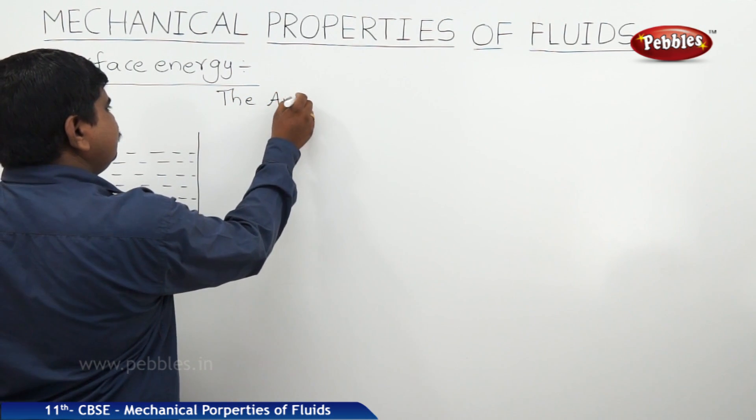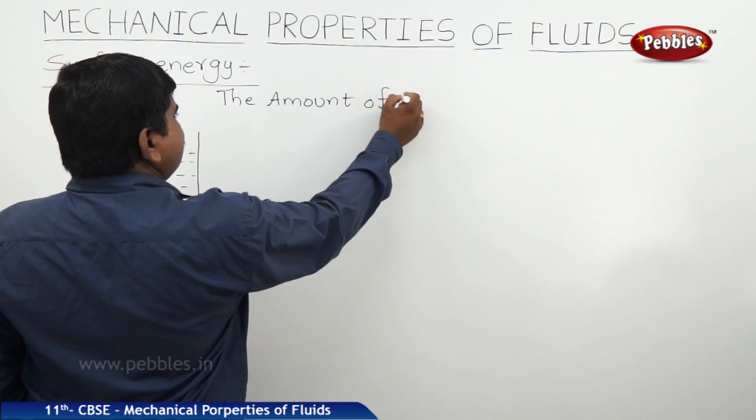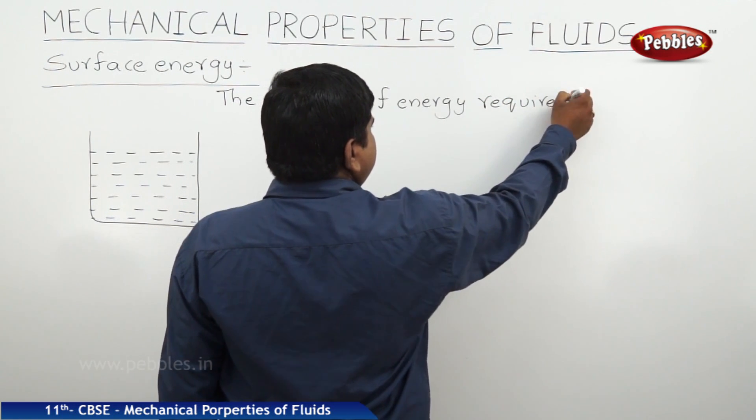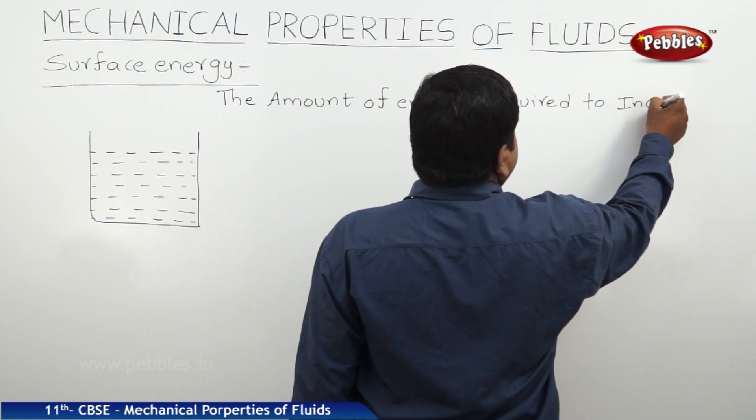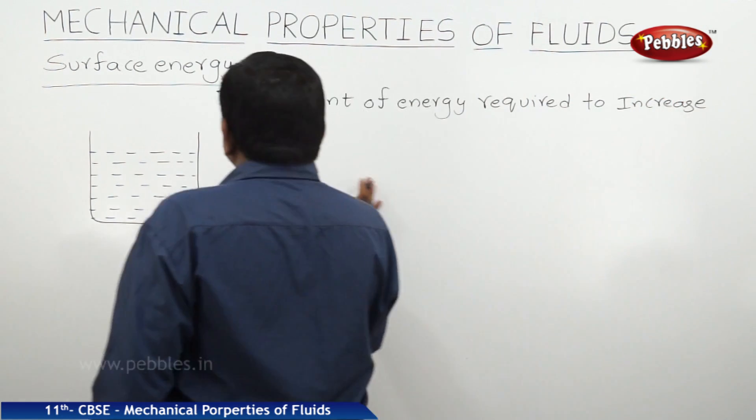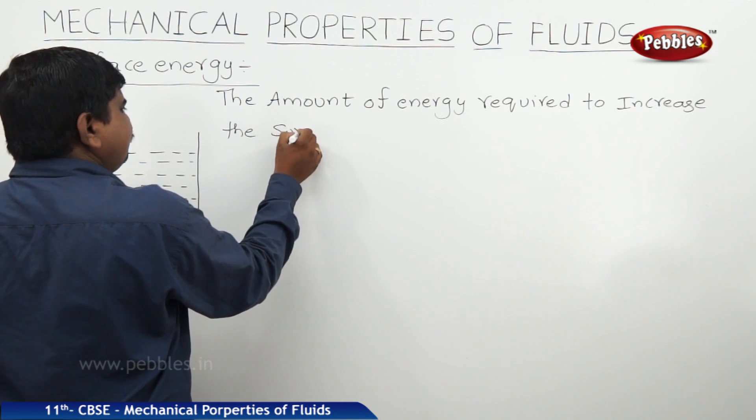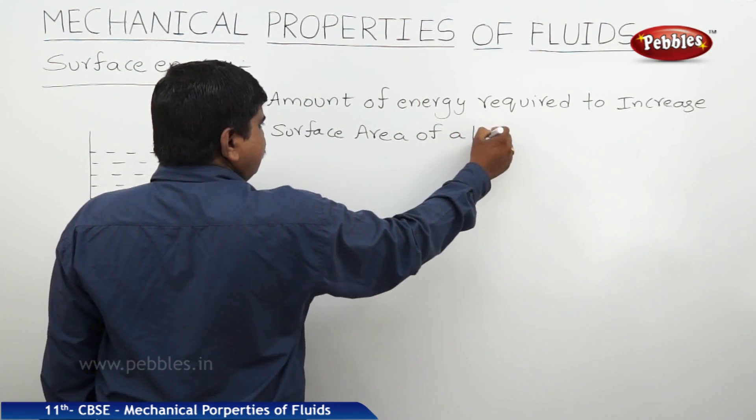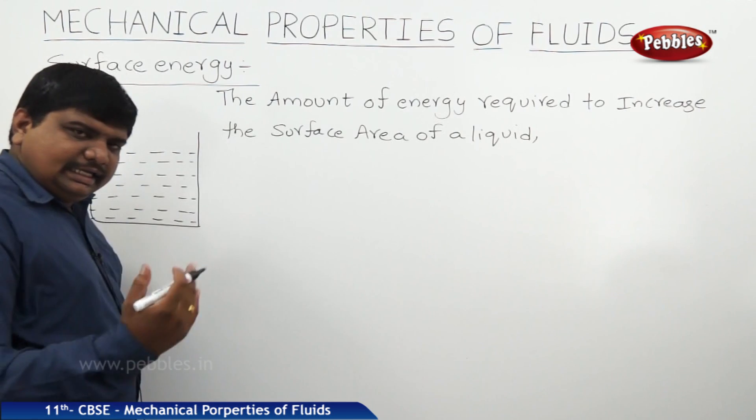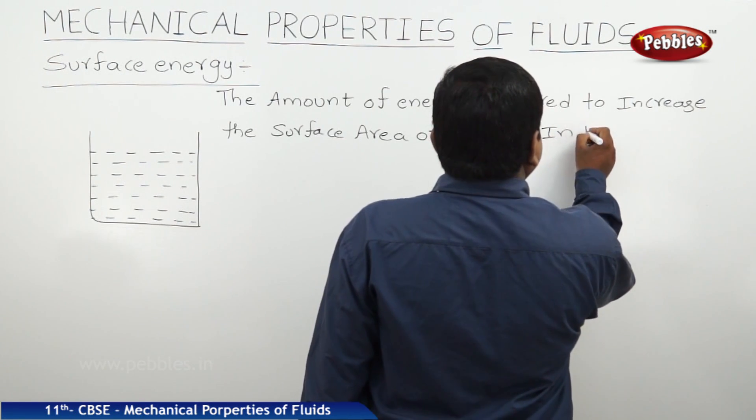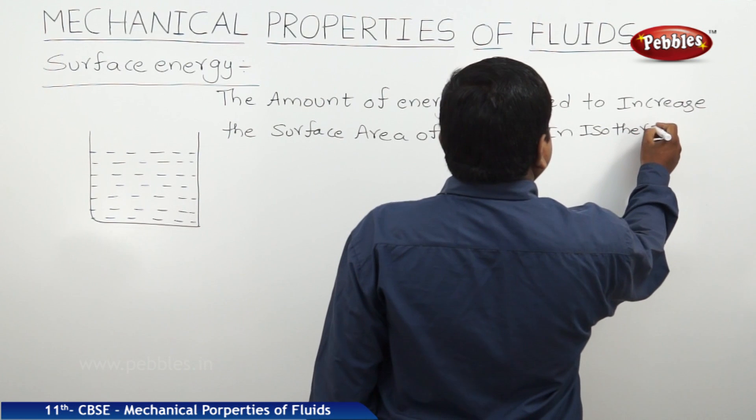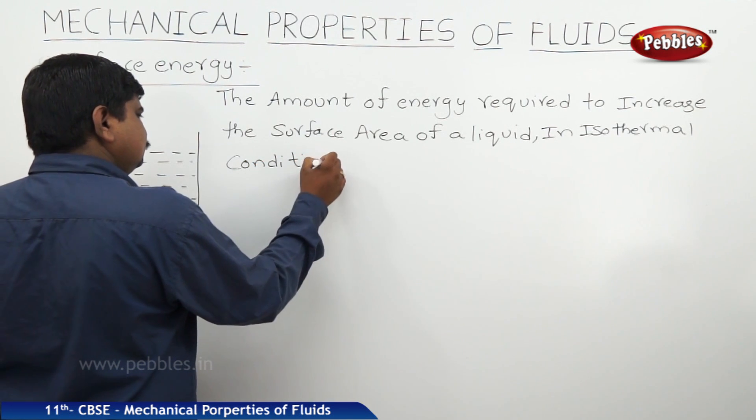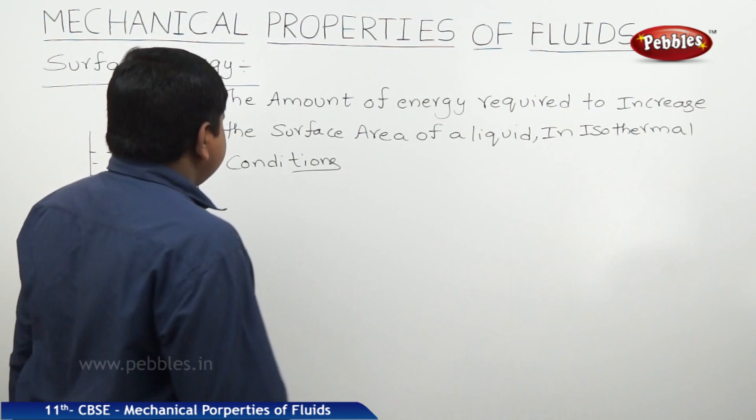So the amount of energy required to increase the surface area of a liquid in isothermal conditions is called surface energy.